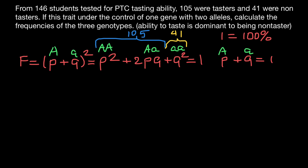For our calculations we need frequencies. The frequency of people who are non-testers and belong to the homozygous recessive genotype is found by dividing 41 by the total number of people, which is 146. So 41 divided by 146 gives us 0.28. This is the frequency of non-testers — all calculations are on a scale between 0 and 1.